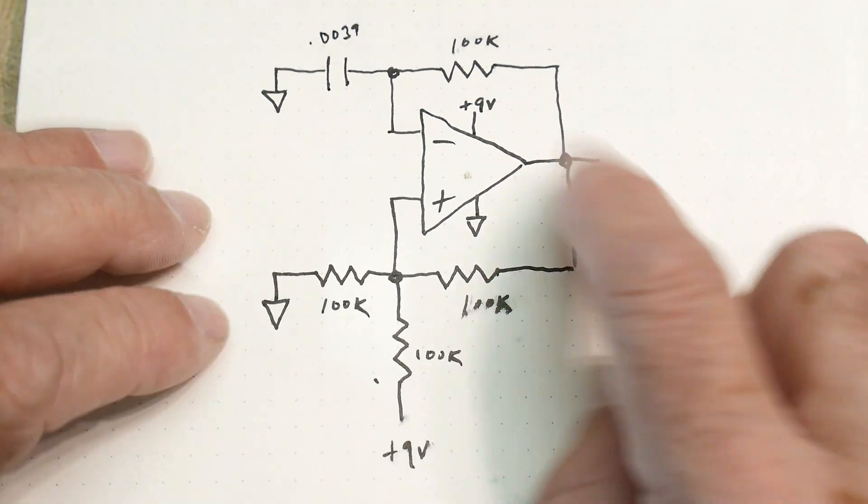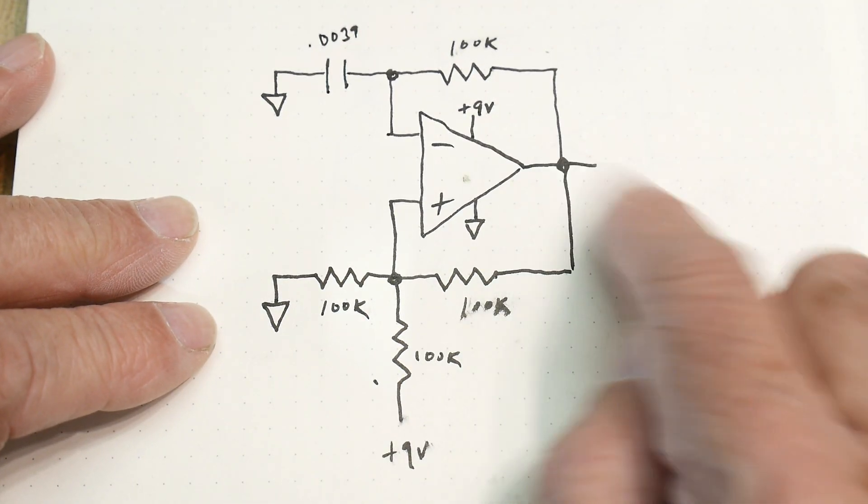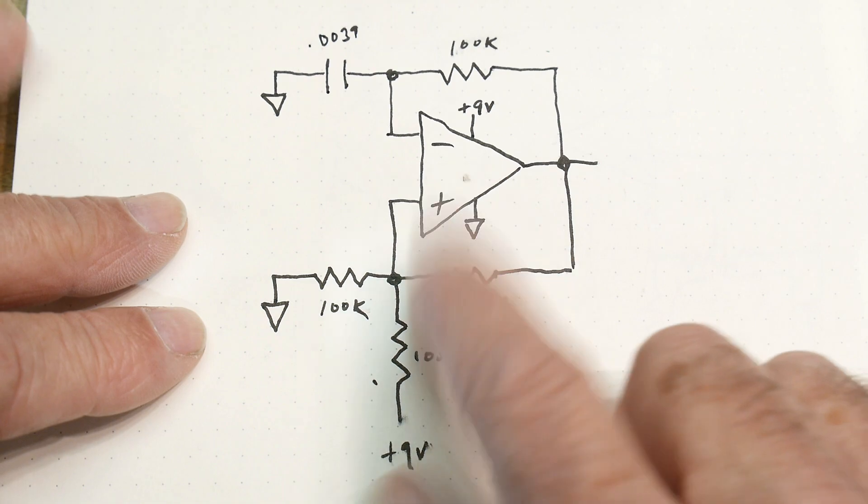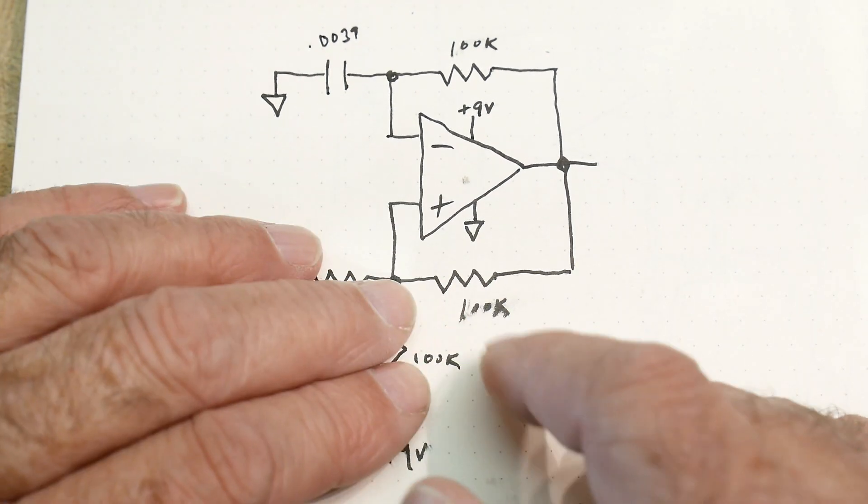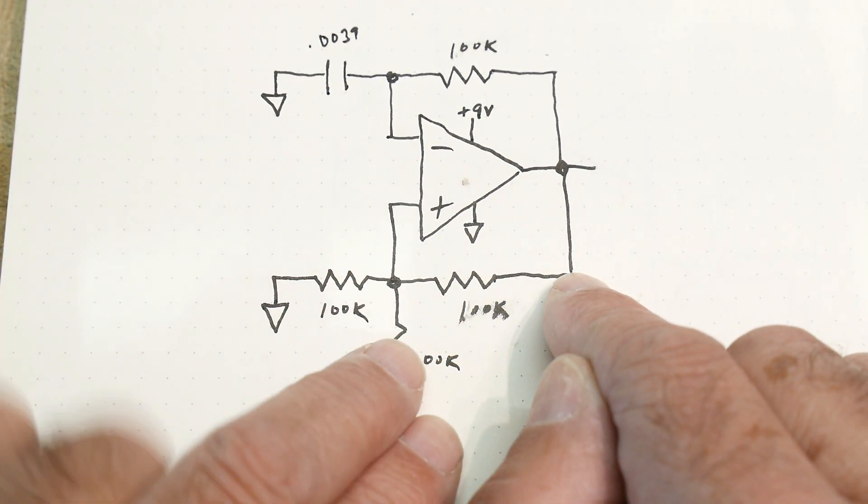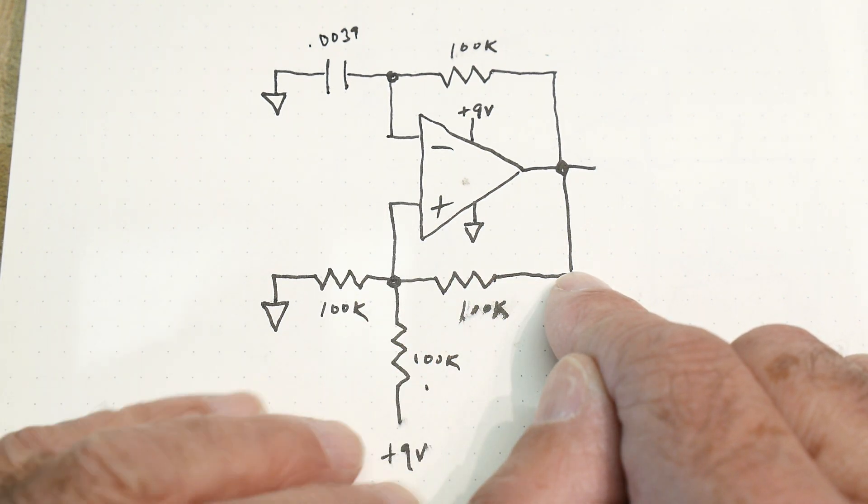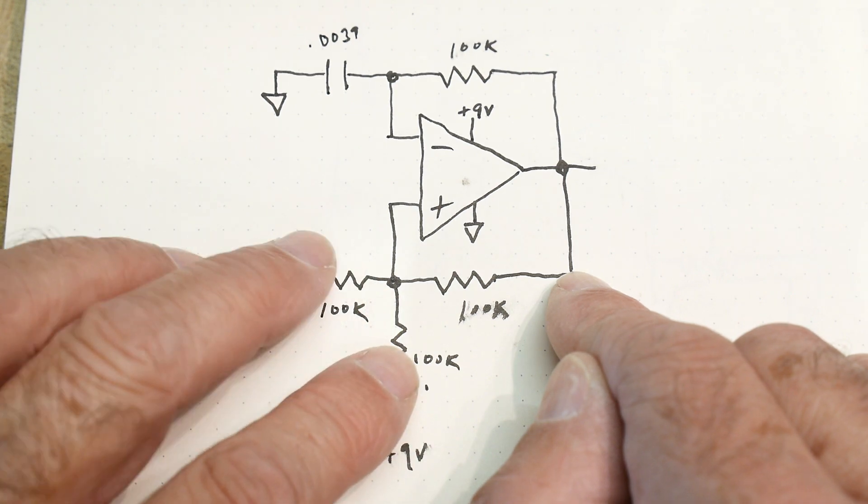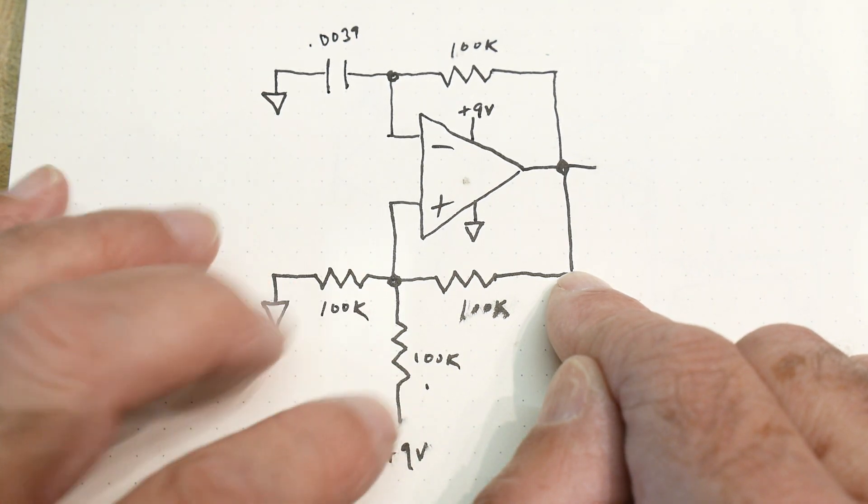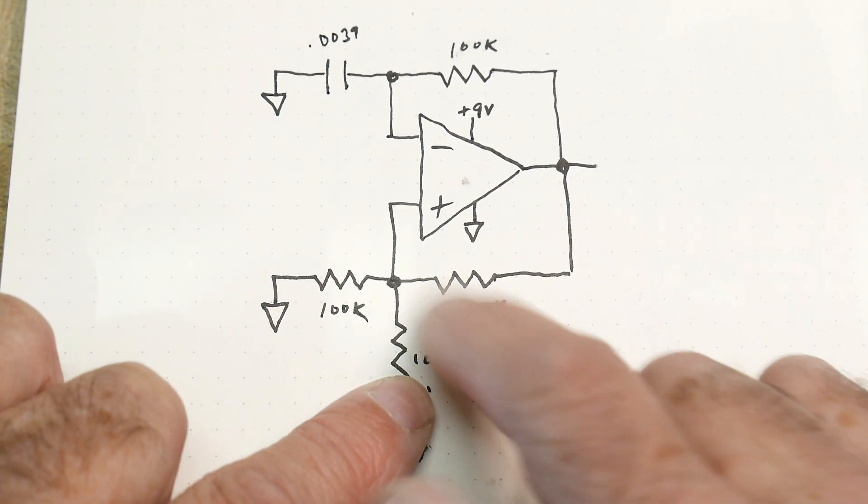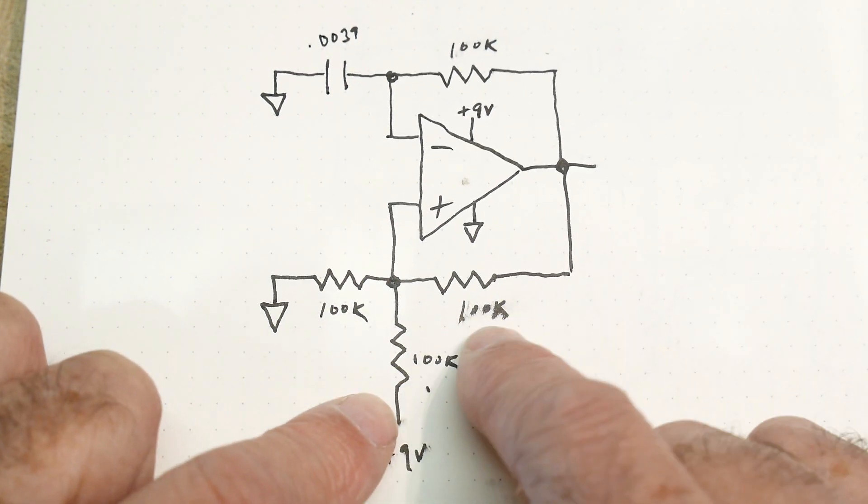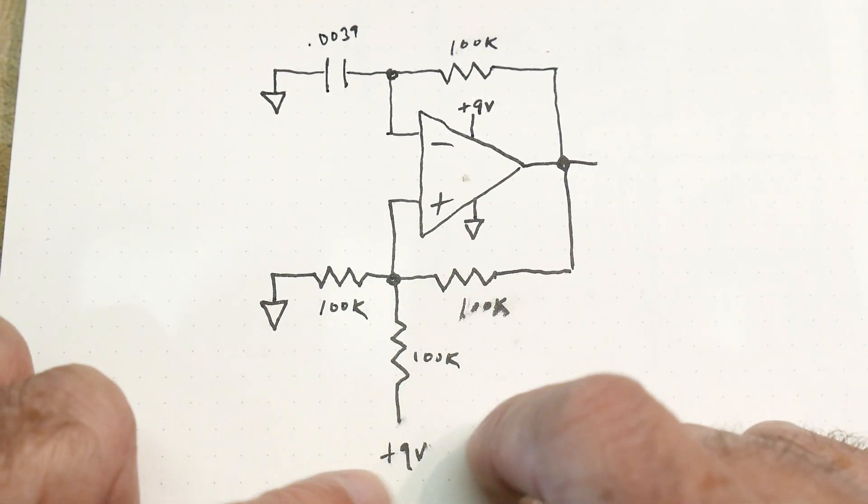The output can either be plus V or ground. But if this is plus V, then this would be plus V over 2, but you will also have another plus V. So it's actually plus V plus V and a ground. So we're going to have two thirds of plus V here.